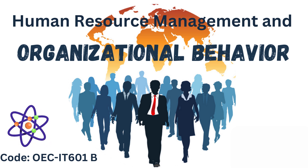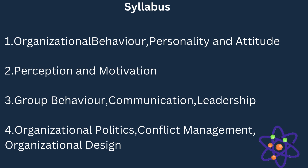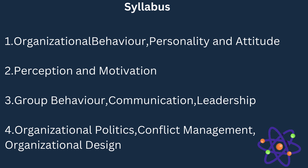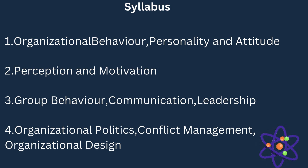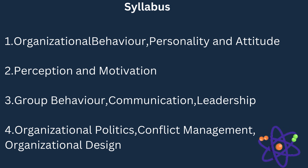At first we will discuss our syllabus. In this subject we have a total of four chapters. The first chapter contains two topics: organizational behavior and personality and attitude. The second chapter contains perception and motivation. Chapter three contains group behavior, communication and leadership. And chapter four contains organizational politics, conflict management and organizational design. Today we will discuss chapter one — organizational behavior.